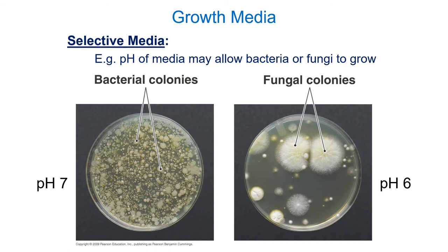Bacteria and fungi are fierce competitors in the natural world with slightly different environmental specializations. Bacteria tend to prefer near-neutral conditions and elevated temperatures around 37 degrees Celsius. If we want to grow fungi in the lab on neutral pH media at higher temperatures, bacteria grow much faster and out-compete the fungi. So to grow fungi we use slightly acidic plates incubated at room temperature — giving the fungus a competitive edge. The fungal plates used in the lab are known as SAB plates, a type of selective media selecting for enhanced fungal growth.